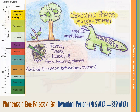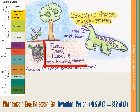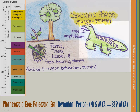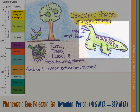Then we move on to the Devonian period, from 416 million years ago to 359 million years ago. This is where you see the first seed-bearing plants, with trees and ferns. Trees are able to grow large because plants are now vascular. Wingless insects start to appear, and lots of jawed fish and sharks take over the seas, winning out over the armored jawless fish.